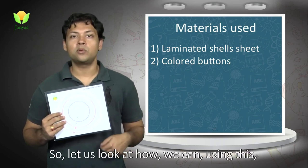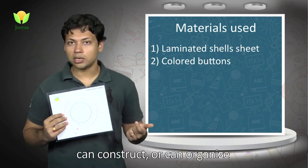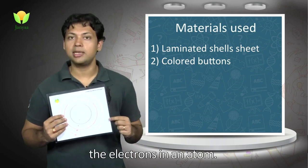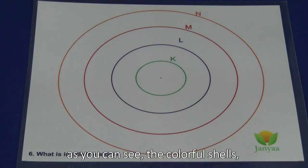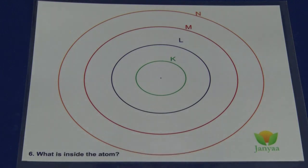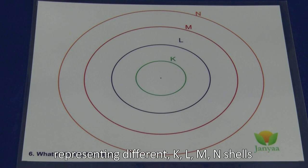Let us look at how we can use this to construct or organize the electrons in an atom. Now, this is a fantastic board that we have. As you can see, the colorful shells representing different K, L, M, and N shells that you might have studied in your books.